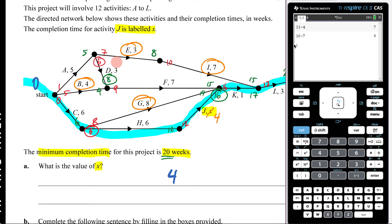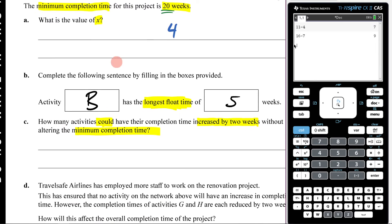And then, of course, everything on my critical path can't be bumped up. So it looks like it's one, two, three, four. So my answer here will be four.